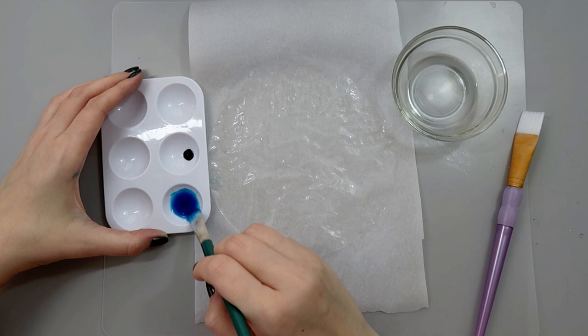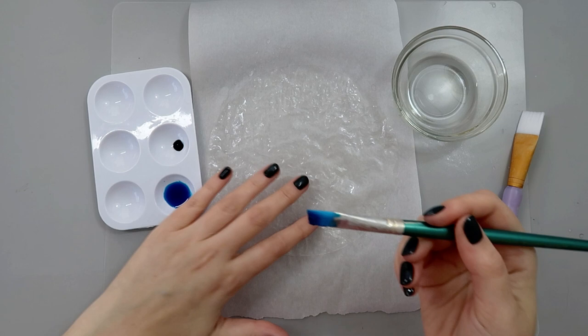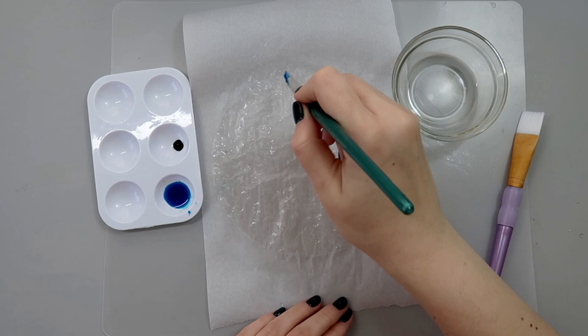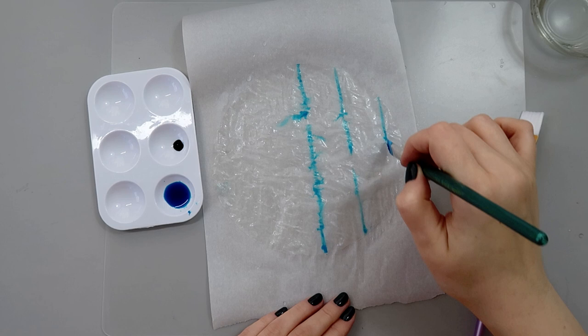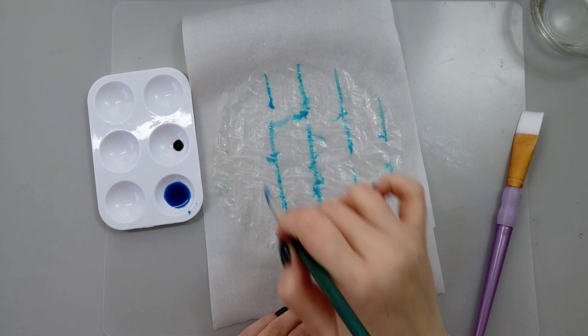Then while my rice paper is still wet, I'm going to draw some lines like tie-dye shibori style. As you can see, because I have enough moisture and water on my rice paper, I can draw these patterns and they will bleed and create this beautiful transition.